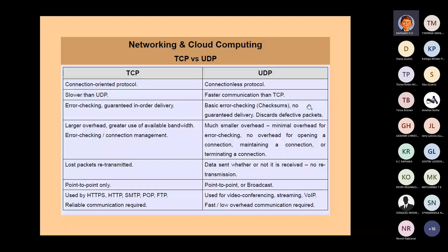With UDP, you may or may not receive the message at all — you may receive it with bits missing in the middle, because if basic error checking finds any errors, those packets are just thrown away. TCP has a larger overhead and greater use of available bandwidth due to its error checking and connection management, which is also why it's slower. UDP, on the other hand, has a much smaller overhead — minimal overhead for error checking and no overhead for opening, maintaining, or terminating a connection.